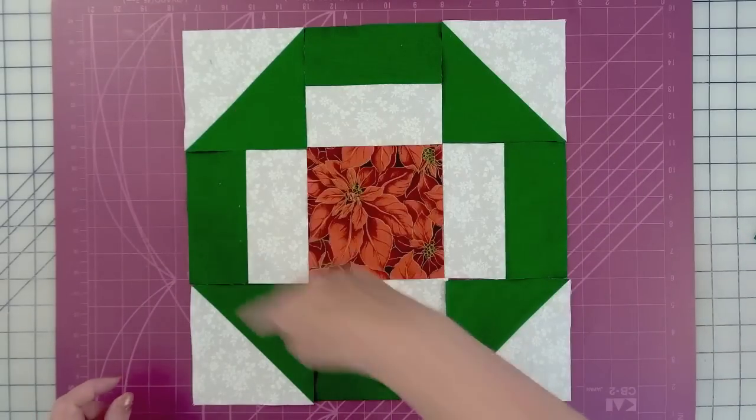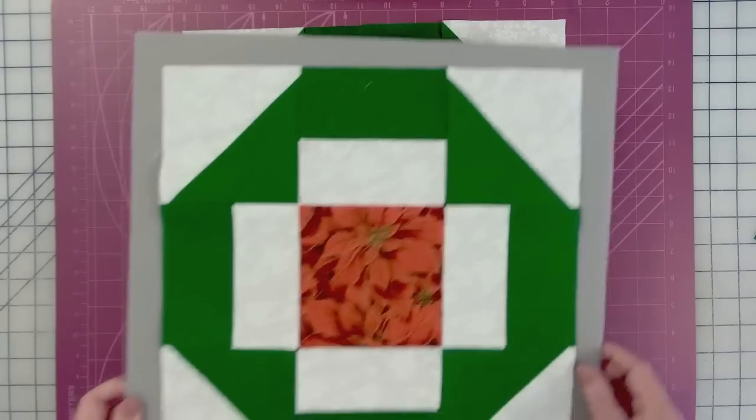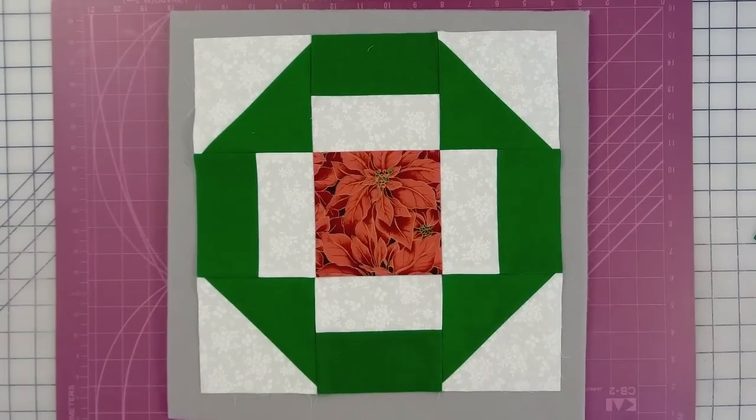And this is the Grecian square, even though it's an octagon. You'll know that it's right because it makes an octagon like a stop sign. And when it's all sewn together, it looks just like this.